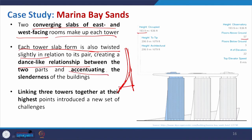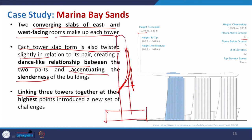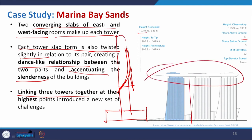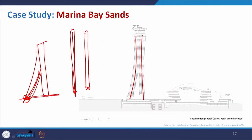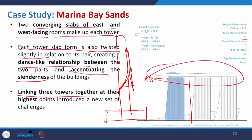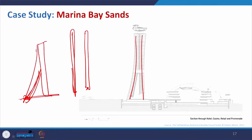Each tower slab form is also twisted slightly in relation to its pair, so that it gives a dance-like relationship — that is the visual aesthetics achieved with this kind of arrangement. In order to get stability, just making the arrangement like this gives the building this shape. It also helps to accentuate the slenderness of the building, so in both cases it gives stability as well as beauty. Linking three towers was the challenge — the top slab is not at the ground floor like the heavy base in many buildings, but at the top, and there is a portion of cantilever, which is definitely good engineering.